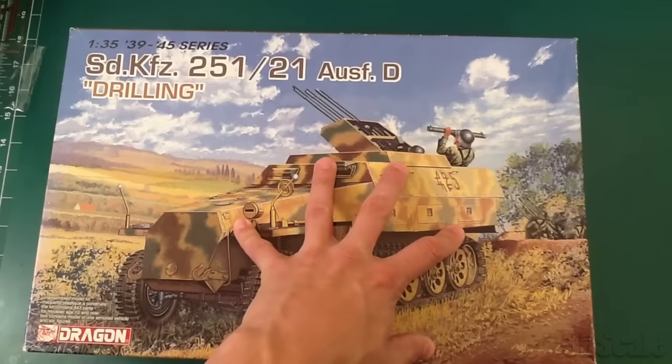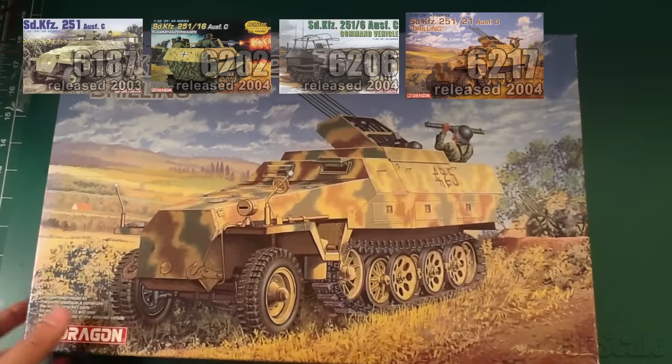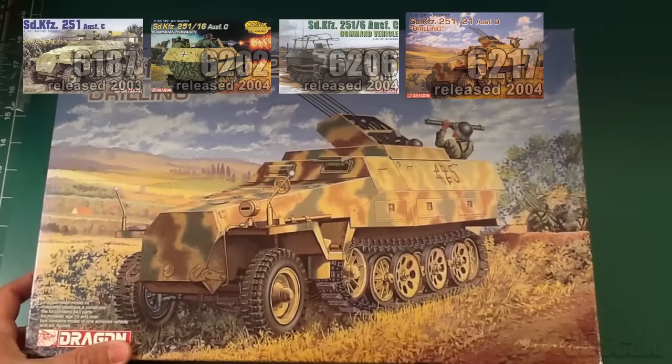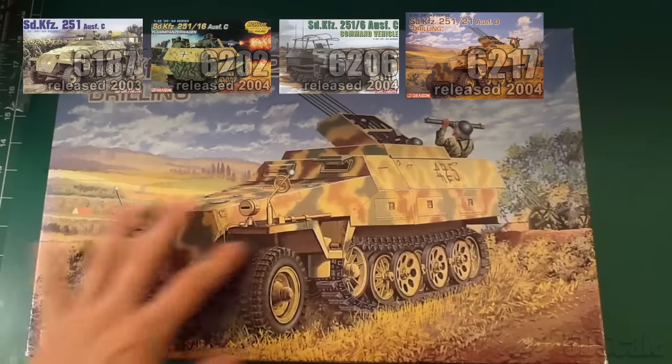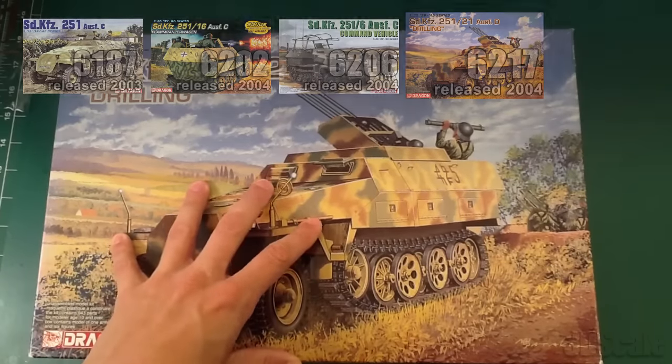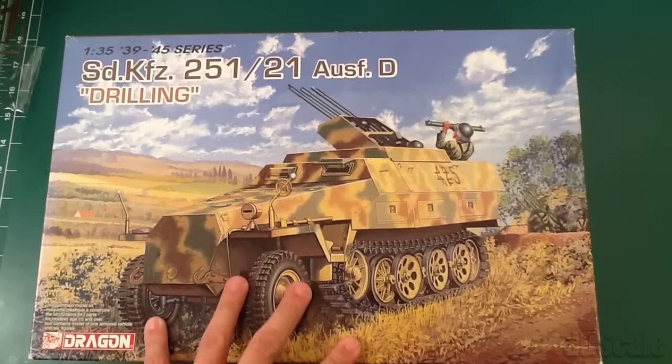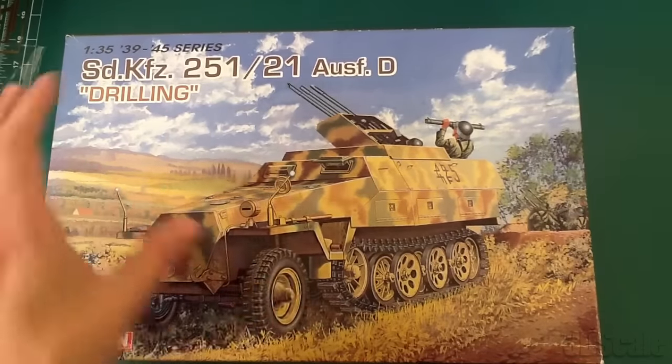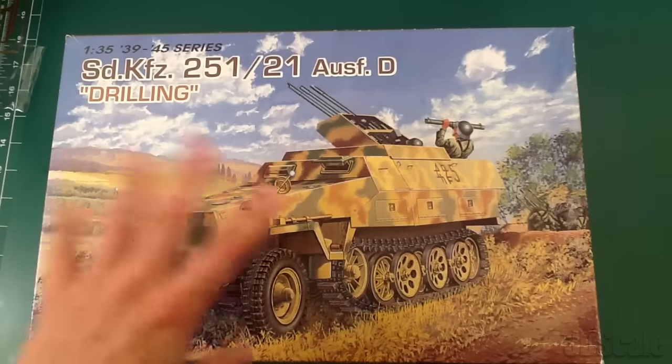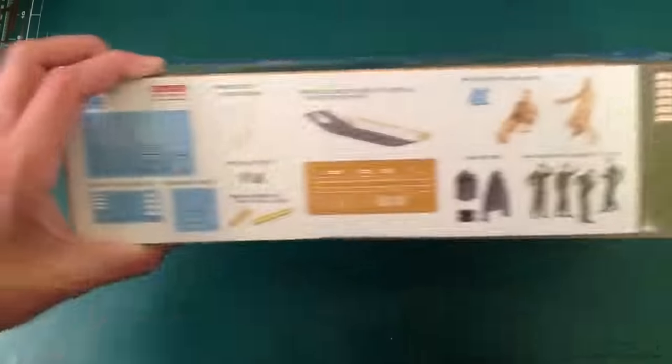This was the fourth 251 in the series after Dragon started them in 03, so there were many after it, but this was pretty early on in the series. This was the first half-track that I bought. I still haven't built a 251 yet. I'm a little intimidated by their size because they're smaller than you'd think. They look huge, and when you see them they're pretty little. So there's a lot in here as it's from 04, so let's look at what it has.